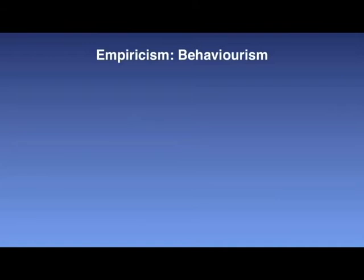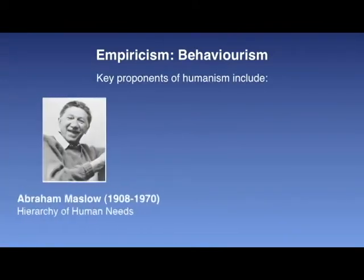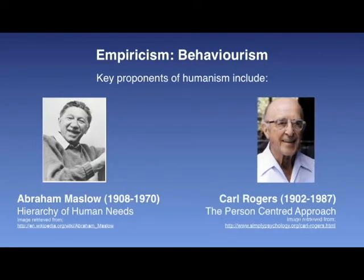This is in contrast to the behaviorist notion of operant conditioning, which argues that all behavior is the result of the application of consequences, and the cognitive psychologists believe that the discovery of knowledge or constructing meaning is central to learning. Humanists also believe that it is necessary to study the person as a whole, especially as an individual grows and develops over the lifespan. The study of self, motivation, and goals are areas of particular interest. Key proponents of humanism include Abraham Maslow and Carl Rogers. The primary purpose of humanism could be described as the development of self-actualized, autonomous people. In humanism, learning is student-centered and personalized, and the educator's role is that of a facilitator. Affective and cognitive needs are key, and the goal is to develop self-actualized people in a cooperative, supportive environment.